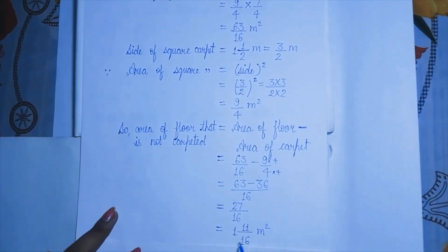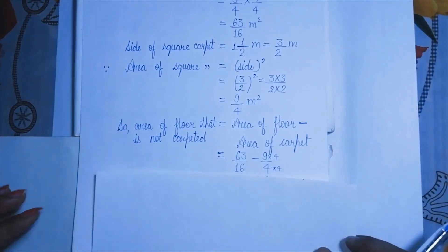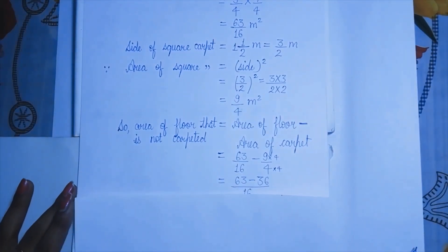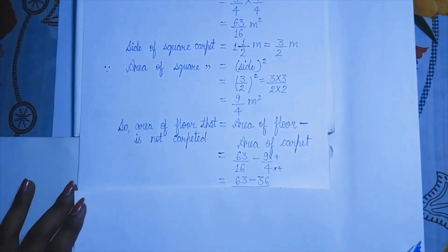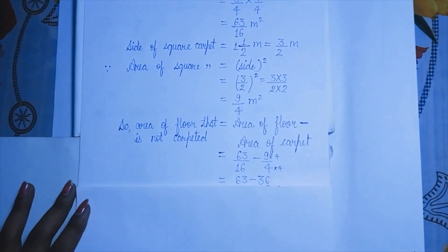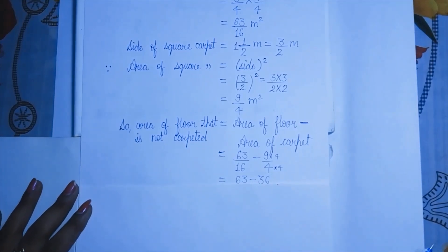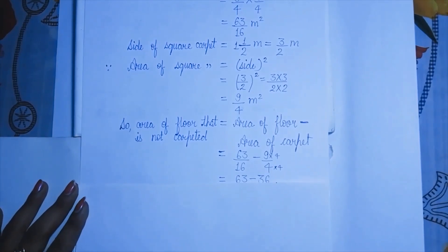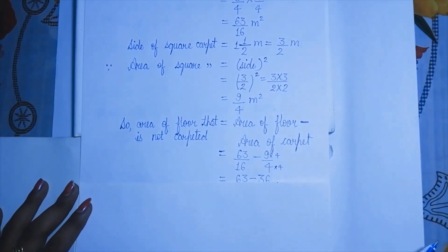The area of the floor that is not carpeted is 1 and 11/16 meter square. With this, we have completed chapter number 1. Very soon I will be explaining chapter number 2, which is about exponents — also a very interesting chapter. Thanks for watching my video, and keep practicing maths to improve yourself.